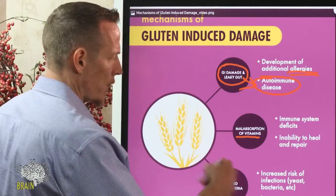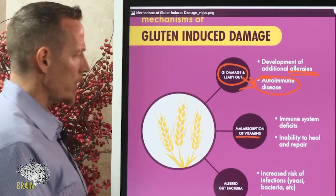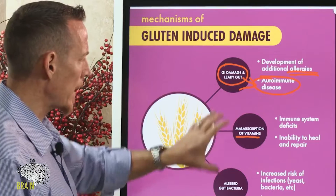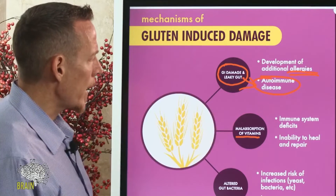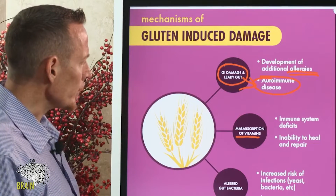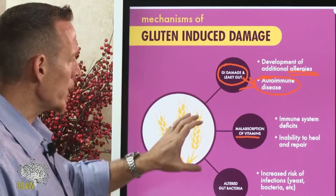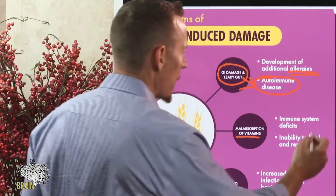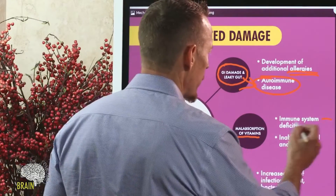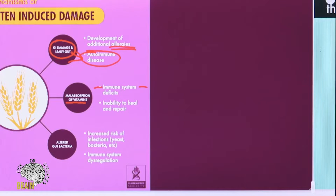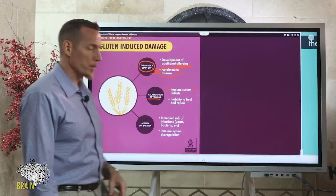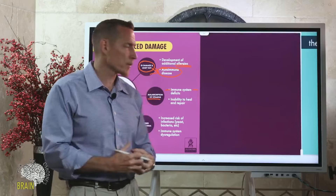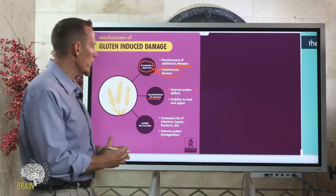Another thing gluten can do is cause malabsorption of nutrients — not just vitamins but also minerals and other nutrients. When you're malabsorbing, your immune system falters and you get immune system deficits. Especially going into cold and flu season, most people want their immune systems working really strong.